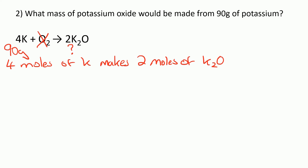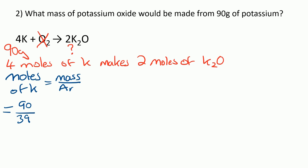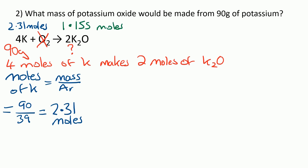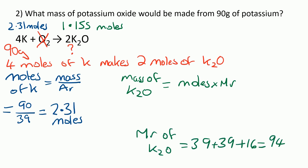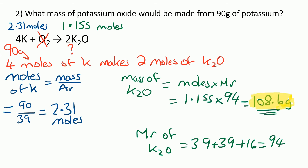Moles of K is mass over AR because it's just K on its own, which is 90 over 39 — so that's 2.31 moles of potassium. We write that on the equation. Now we need to halve it to get the number of moles of K2O because it's a 4 to 2 ratio, so that would be 1.55 moles of K2O. We then work out the mass of K2O, which is moles times MR. The MR of K2O is 39 plus 39 for the two potassiums plus 16 for the oxygen, which is 94. We get 108.6 grams.